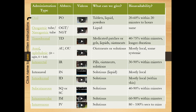Bioavailability covers not only how much of the medication gets to the tissues where it's needed, but also how long it takes. Intravenous is 80–100% in seconds to minutes; intramuscular is close to that; subcutaneous is 60–90% — you never get 100% unless giving IV. Oral, orogastric, and nasogastric routes may or may not get medication all the way into the tissues. Some medications, like antiparasite drugs for GI parasites, we intentionally want to keep within the digestive tract.